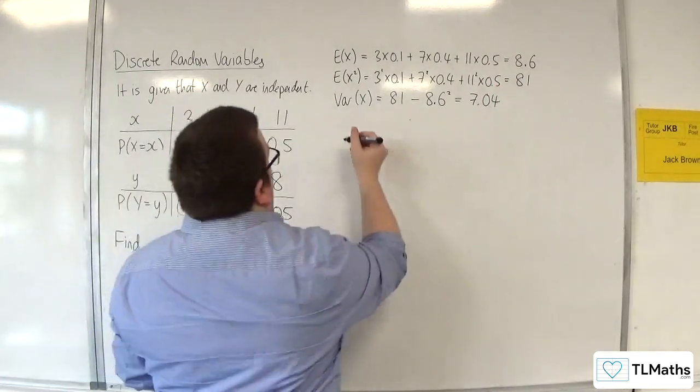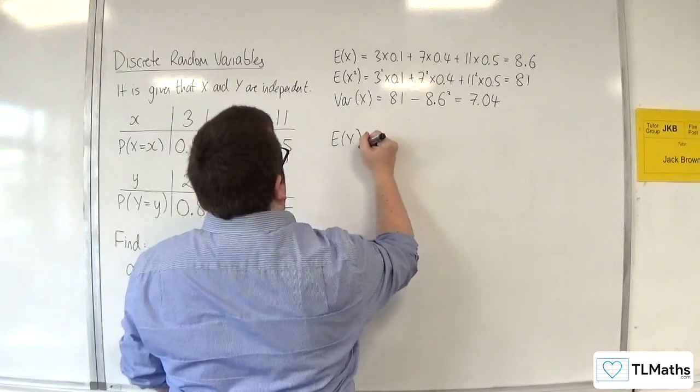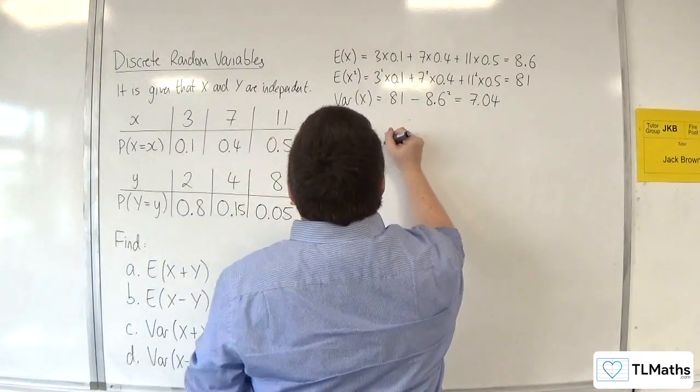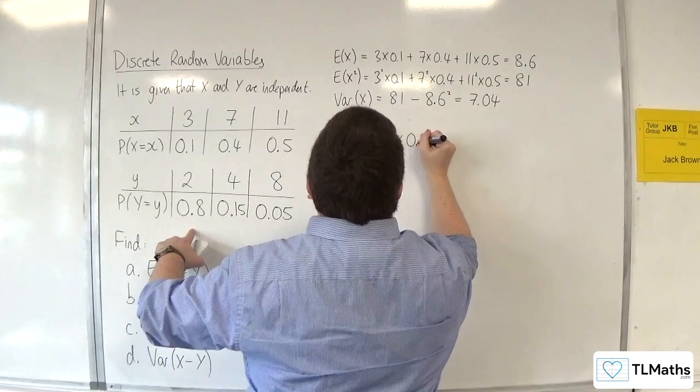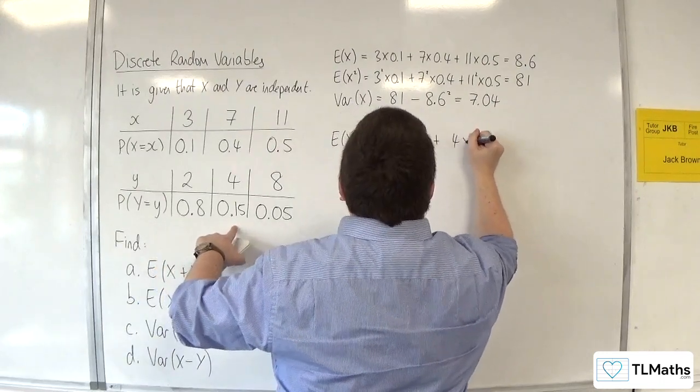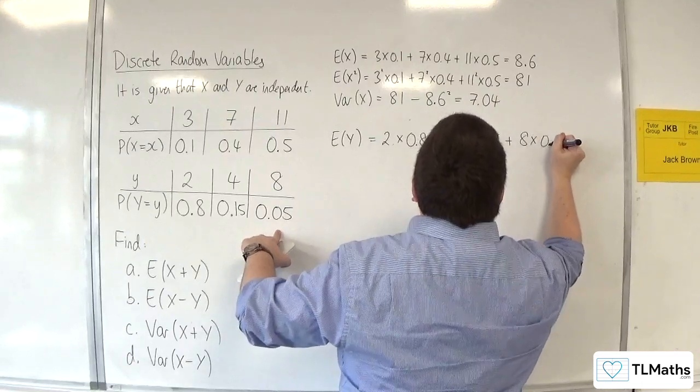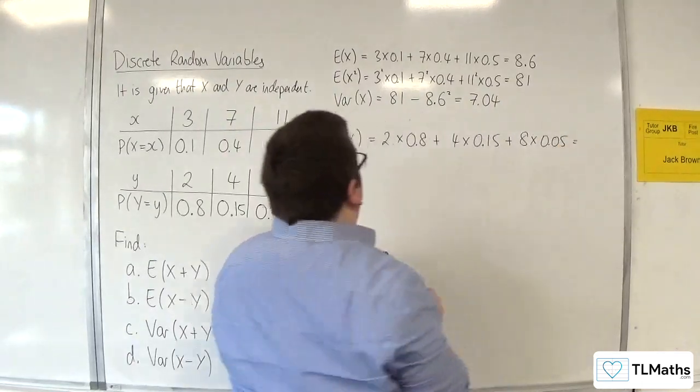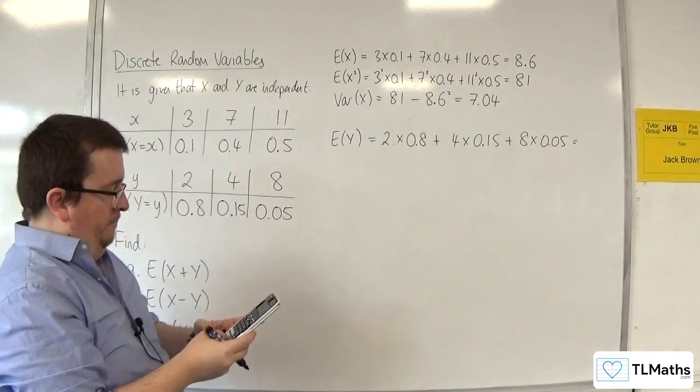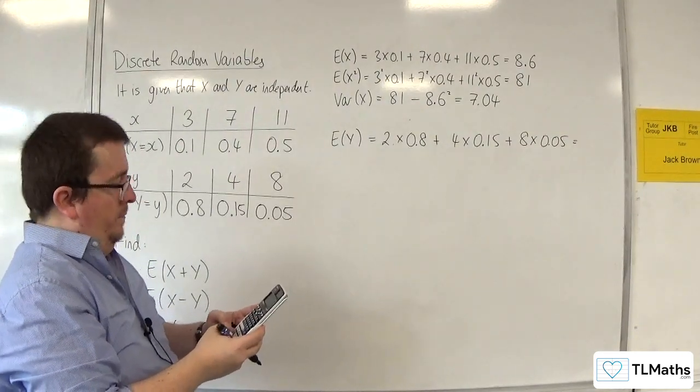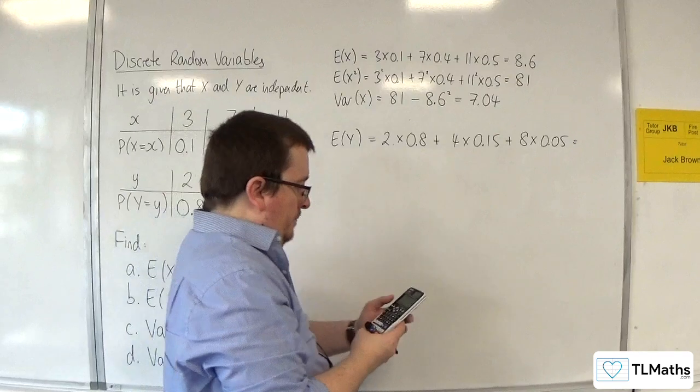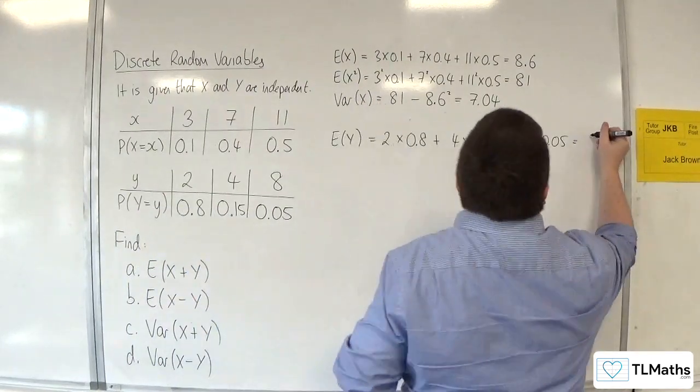Now we need E of Y. So 2 times 0.8 plus 4 times 0.15 plus 8 lots of 0.05. So that's 2.6.